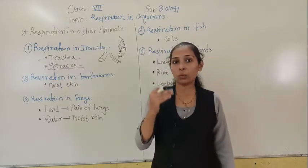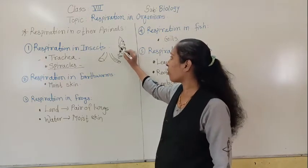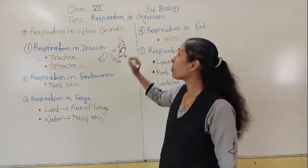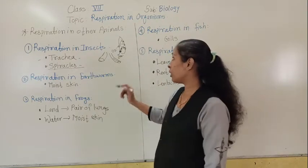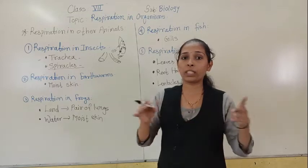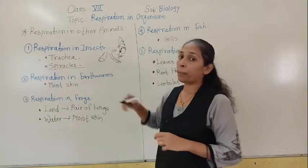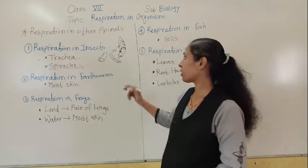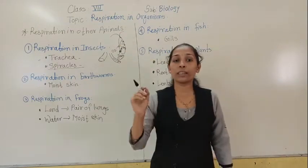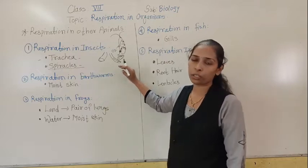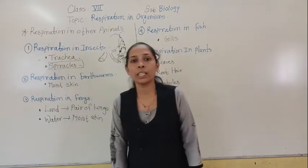Just as human beings use nostrils for inhalation and exhalation, in cockroaches and insects the spiracles are used for the exchange of gases. Oxygen goes inside through spiracles, then into the trachea, gets diffused and mixed into the whole body, reaching each and every tissue and cell. It is used for breakdown of food and release of energy and carbon dioxide. That carbon dioxide flows out through the spiracles. So the respiratory organs in insects are the trachea and spiracles.